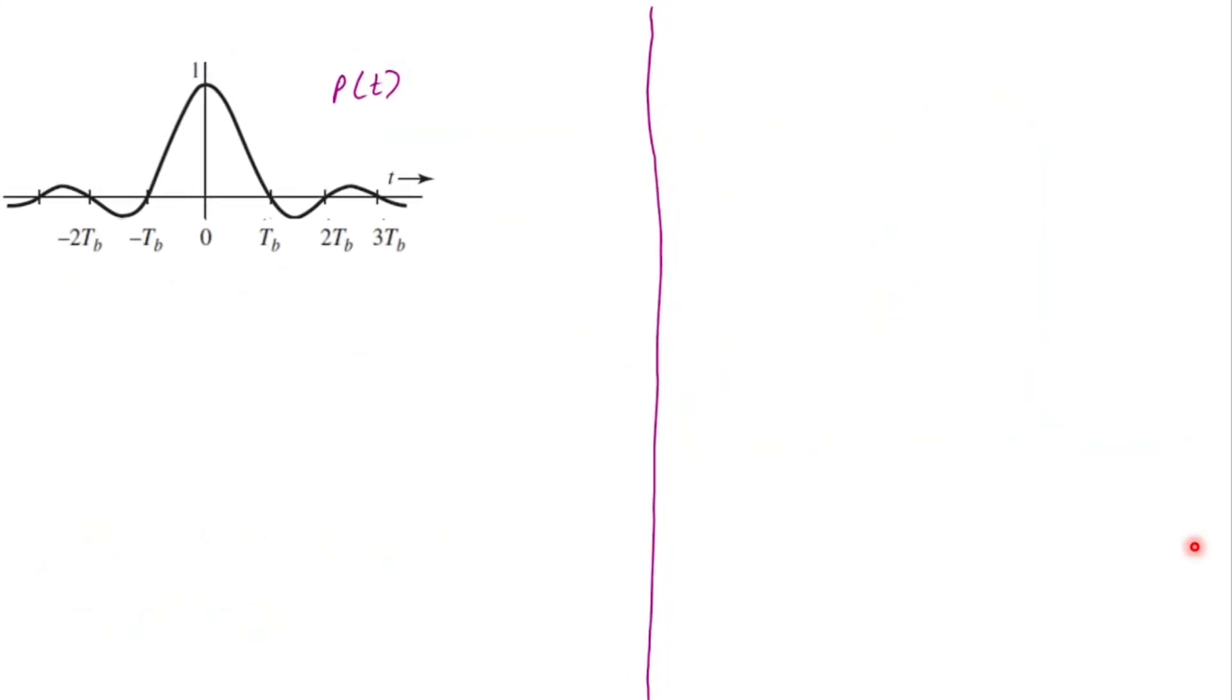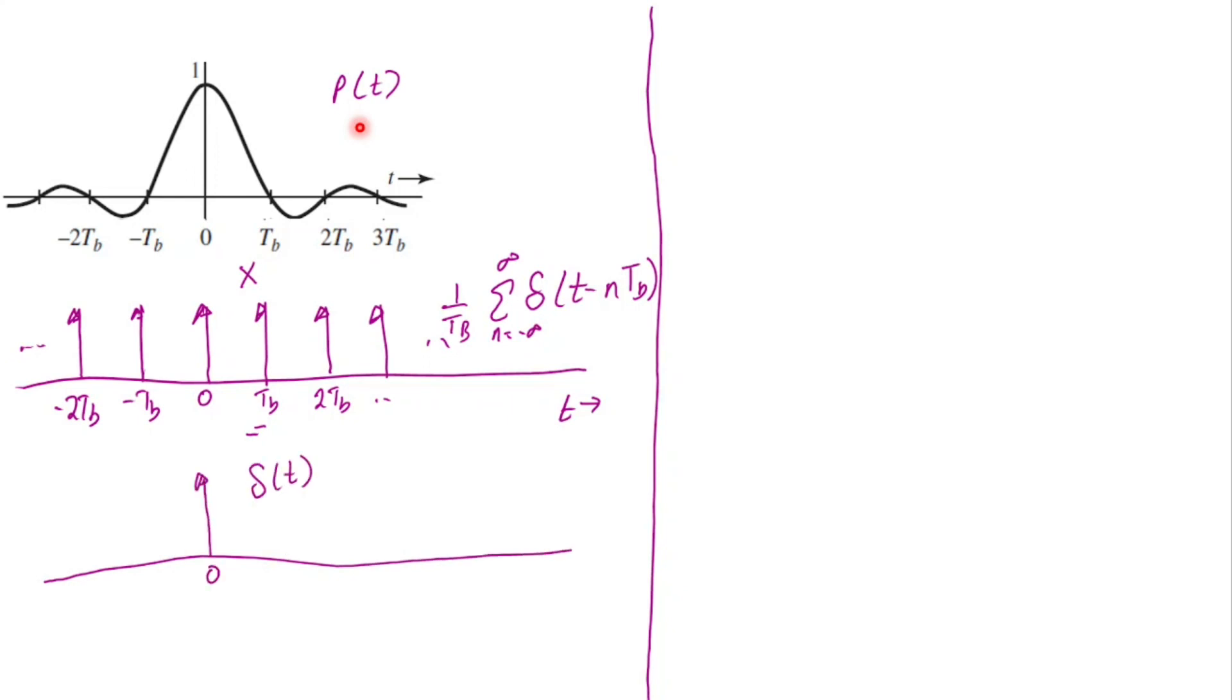Consider a pulse p of t which is our sinc function. Let us sample this by multiplying with an impulse train. The resultant signal is simply delta of t. Analytically the pulse p of t times 1 over time period that is Tb and a sum of all integer values of n. So this multiplication yields delta of t.